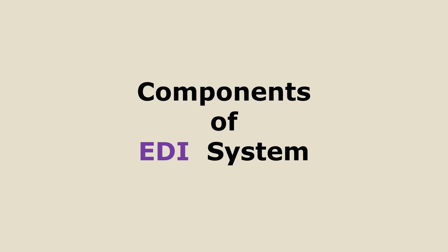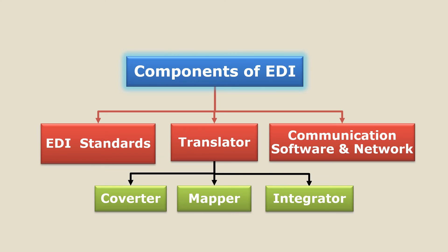Now let us understand the components of the EDI system. We already looked at the working process, in which we identified different components. Broadly there are three major components. First is EDI standards, second is EDI translator, and third is the communication software and network. Let us look at all of these one by one.